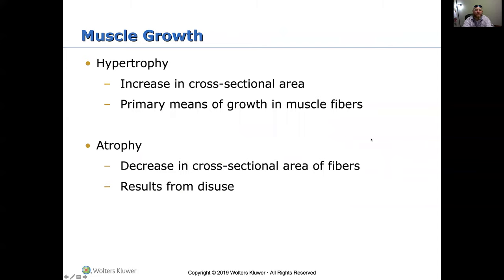Muscle growth — there's growth and deterioration. Hypertrophy is an increase in the cross-sectional area of muscle fibers, meaning growth. Atrophy is the opposite — a decrease in cross-sectional area resulting from disuse. If you've had a cast on and kept from using a limb, when it came off you definitely saw atrophy from disuse. It doesn't take long for that to happen — it's a lot easier to lose muscle than it is to gain it.